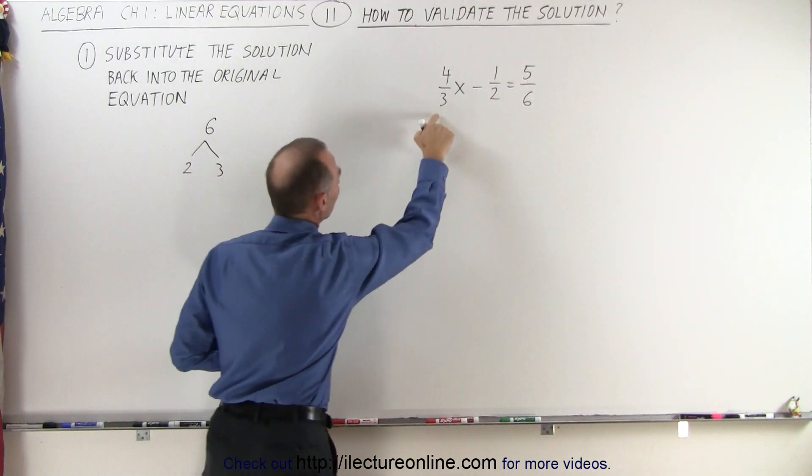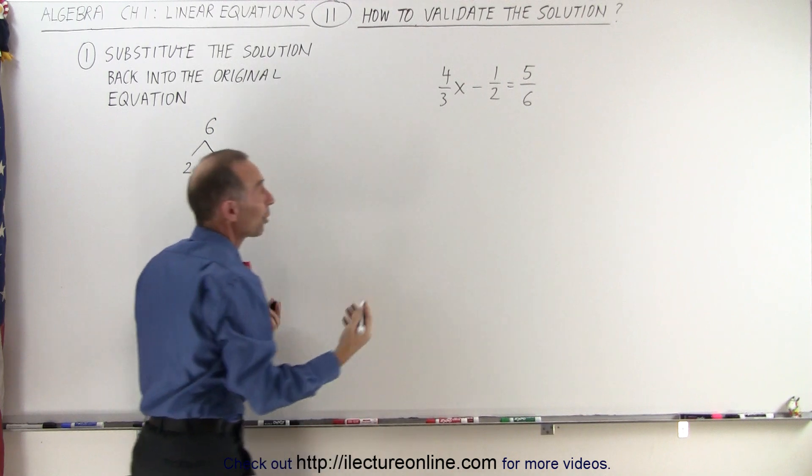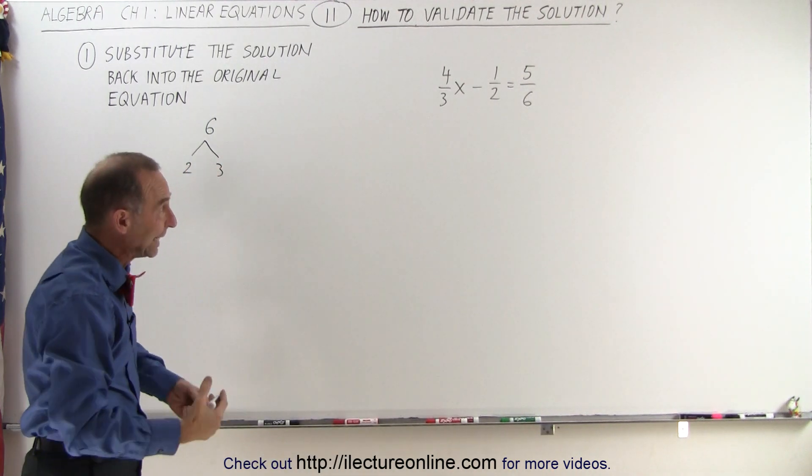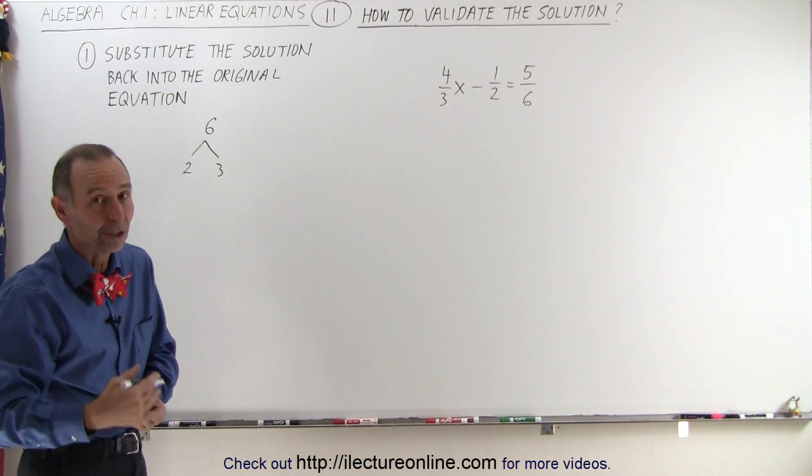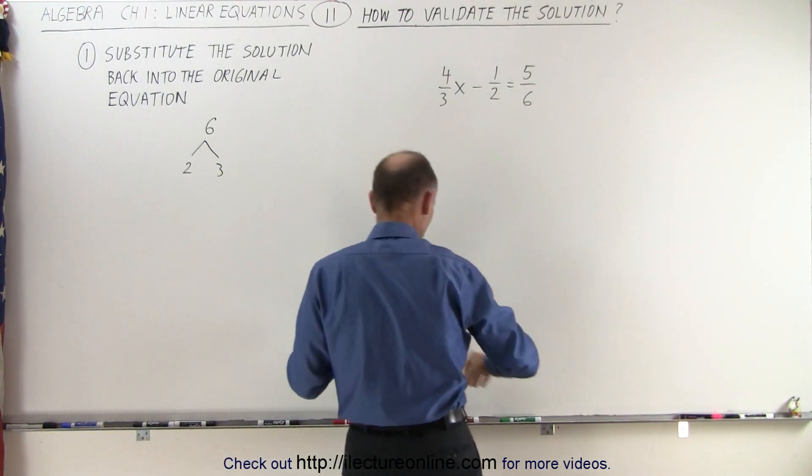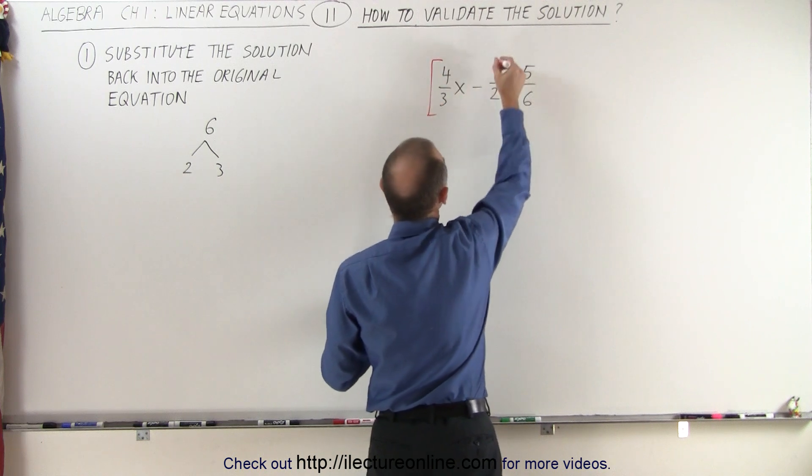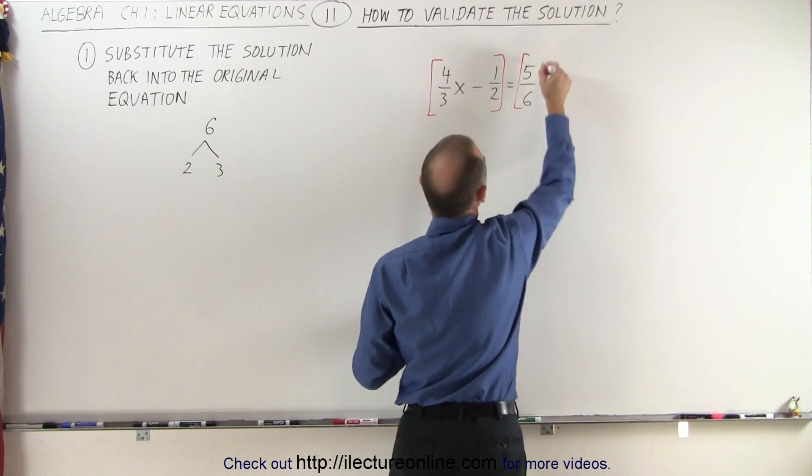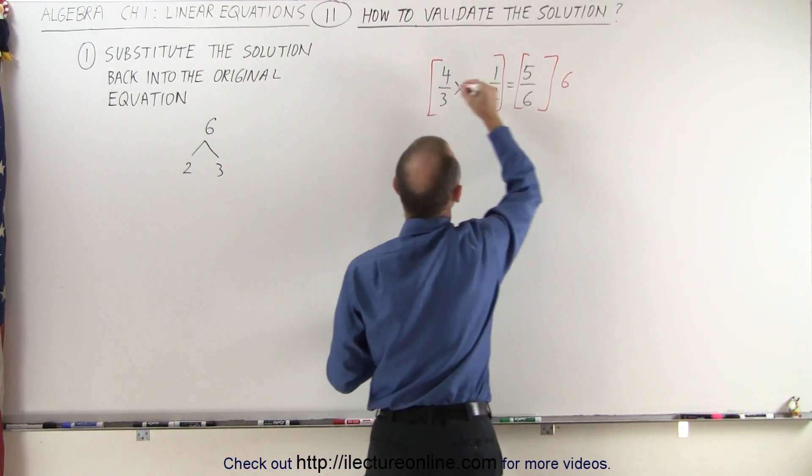Notice that those two factors right here also appear over here. In other words, the lowest common denominator is the number 6. It happens to be the largest denominator that are present. So what we're going to do is multiply both sides of the equation by the lowest common denominator, which in this case will be 6.